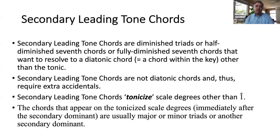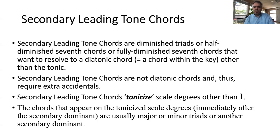Secondary leading tone chords are diminished triads, half-diminished seventh chords, or fully diminished seventh chords that want to resolve to a diatonic chord — a chord within the key other than the tonic — or to the secondary dominant found on that scale degree being tonicized. Secondary leading tone chords are not diatonic chords and thus require extra accidentals. Secondary leading tone chords tonicize scale degrees other than I, and the chords that appear on the tonicized scale degrees immediately after are usually major or minor triads or another secondary dominant.